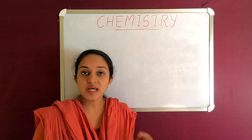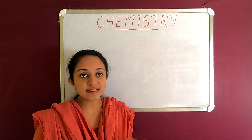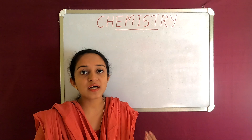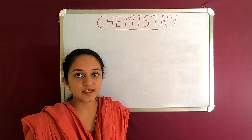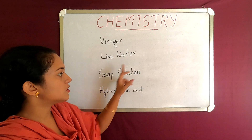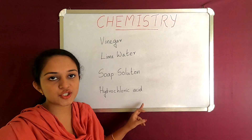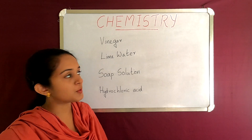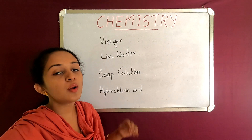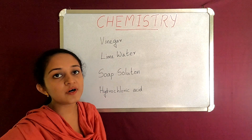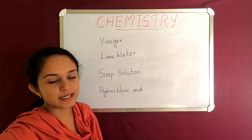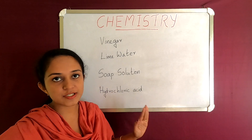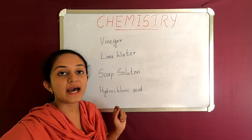Acids and Bases are taught in the previous class. If you have a substance — acid or base — we are going to test it with a litmus paper or litmus solution. We are going to discuss some substances: vinegar, lime water, soap solution, hydrochloric acid. This is a litmus paper test. If you dip a litmus paper, the blue color of the litmus paper will change to red because vinegar is acidic. That means that substance is acidic.